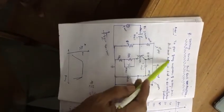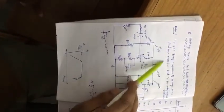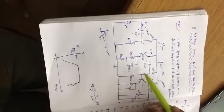The aim of this experiment is to plot the frequency response of voltage series feedback amplifier and find its bandwidth with and without feedback. This is your circuit diagram.